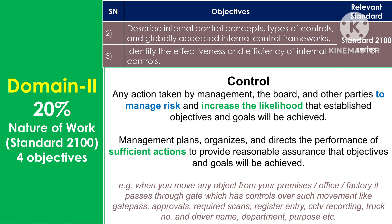Control is any action taken by management, the board, and other parties to manage risk and increase the likelihood that established objectives and goals will be achieved. Management plans, organizes, and directs the performance of sufficient actions to provide reasonable assurance that objectives and goals will be achieved. For example, when you move any object from your premises — office or factory — it passes through a gate which has controls: gate controls for such movement.